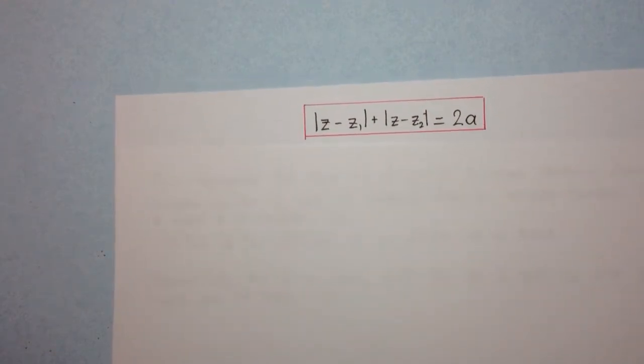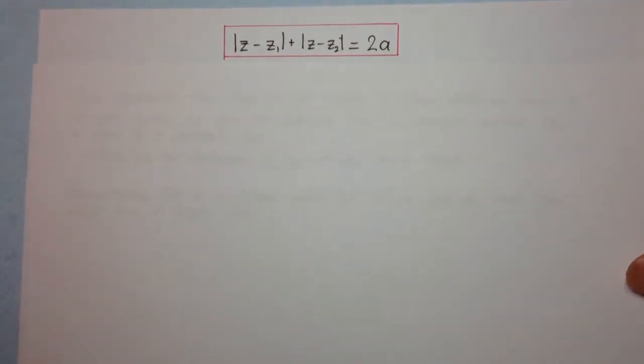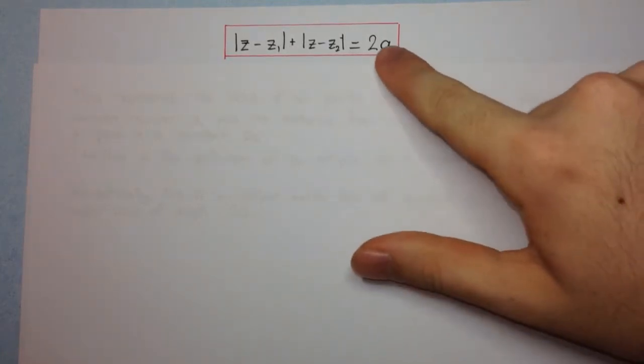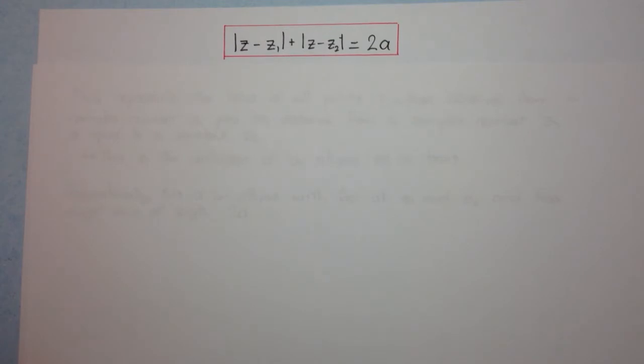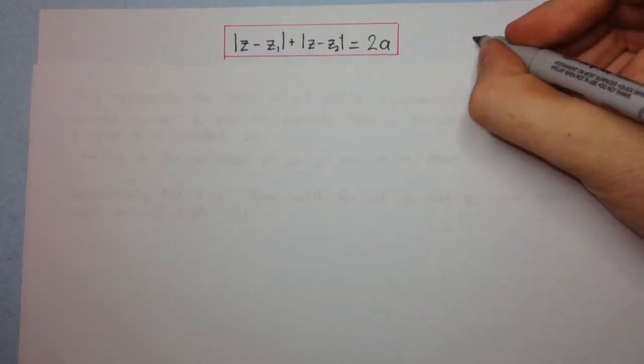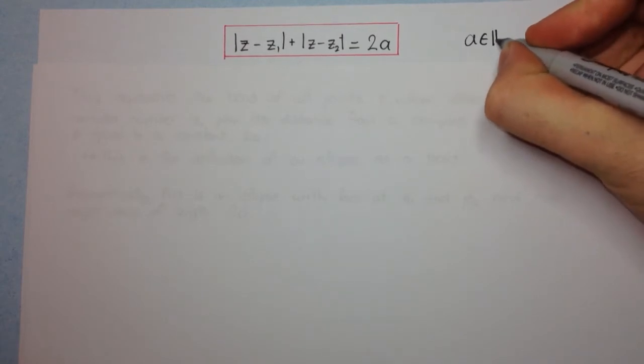Alright, and let's have a look at a final example here. So this one says that the modulus of z minus z₁ plus the modulus of z minus z₂ is equal to 2a. Alright, now here I forgot to mention that a is a constant. So I might just write here, a will be a real constant. So a is real.